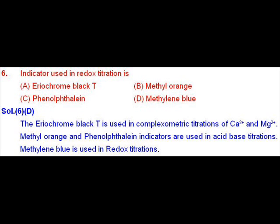In the given indicators, Eriochrome Black T is used for complexation titrations of calcium 2+ and magnesium 2+ ions. Methyl orange and phenolphthalein indicators are used for acid-base titrations. And methylene blue is used for redox reactions or redox titrations.